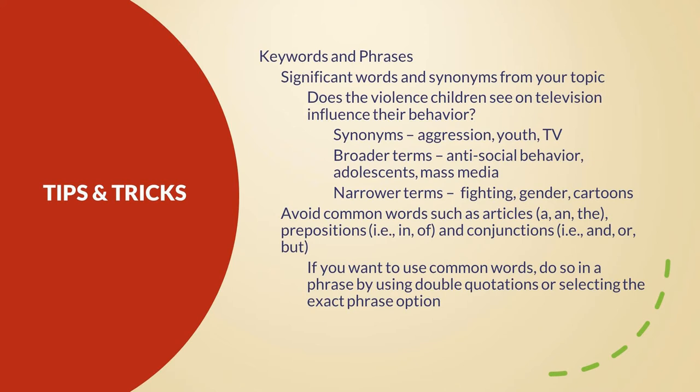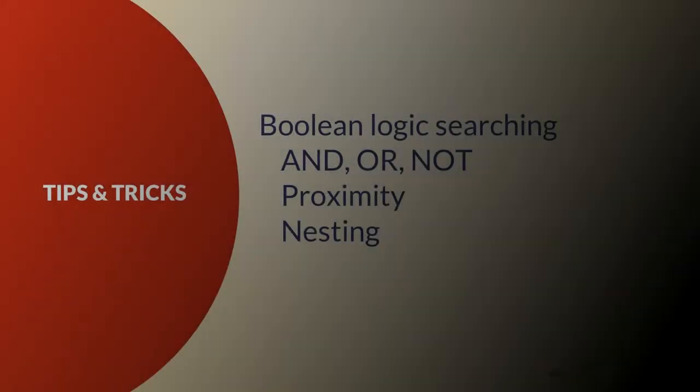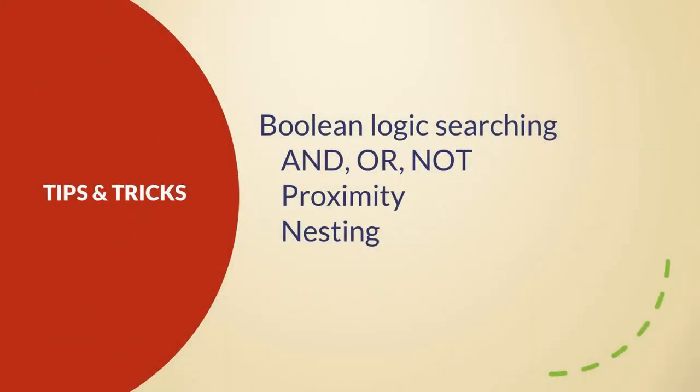When searching, avoid common words such as articles, prepositions, and conjunctions in order to get better results. If you do want to use common words, do so in a phrase by using double quotations or by selecting the exact phrase option. You can also get better results by using boolean logic — we talked earlier about how to use AND, OR, and NOT.